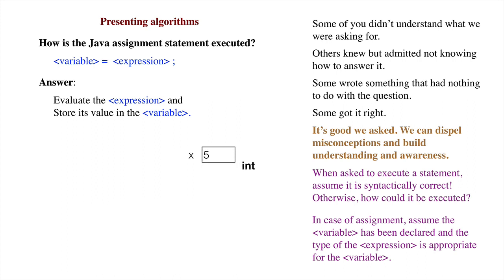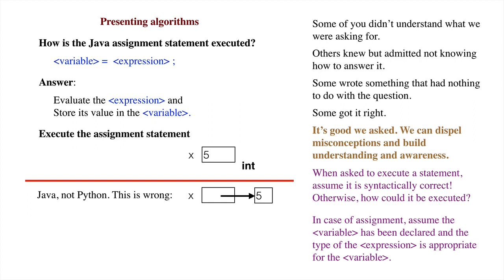Now suppose we have a variable x. Note that this is Java and not Python. So box x contains the value and not a pointer to the value. To execute the assignment statement x becomes x plus 2 semicolon, we evaluate the expression x plus 2, resulting in the value 7, and store the value in box x.